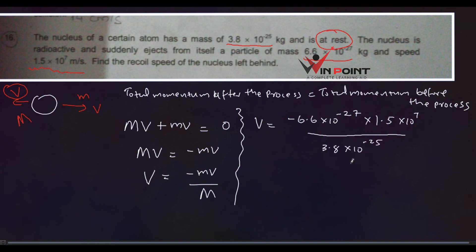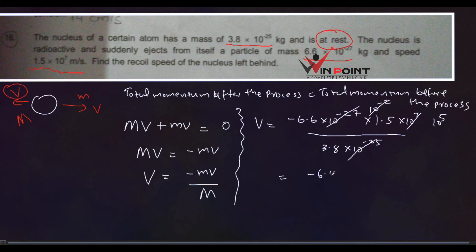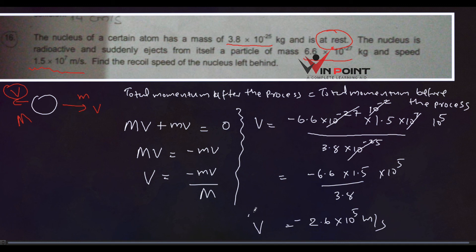When multiplying powers we add them, when dividing we subtract. 10⁻²⁷ divided by 10⁻²⁵ gives 10⁻². Then 10⁻² × 10⁷ = 10⁵. So we get −(6.6 × 1.5) / 3.8 × 10⁵, which equals −2.6 × 10⁵ m/s — that is the recoil velocity of the nucleus.